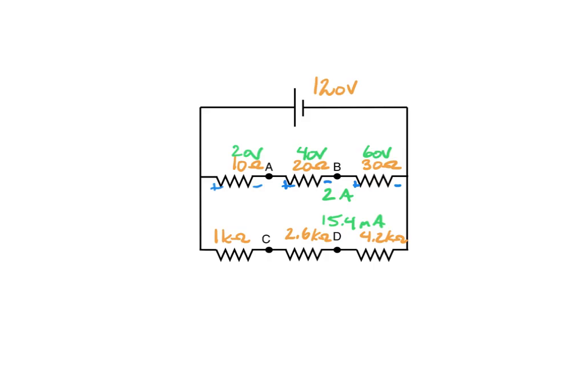Now I can determine my voltage drops across each resistor using Ohm's law. This current times this resistance will give me voltage, this current times this resistance will give me voltage, and this current times this resistance will give me voltage.